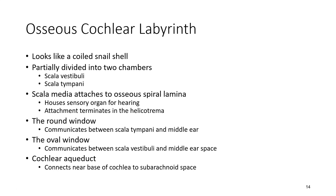The round window connects to the scala tympani side of the osseous cochlear labyrinth, while the oval window connects to the scala vestibule side. Both of these windows are connections to the middle ear. There is also a cochlear aqueduct that connects near the base of the cochlea out to the subarachnoid space, allowing cerebrospinal fluid to enter into the inner ear.